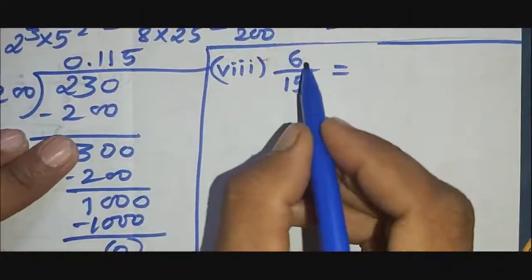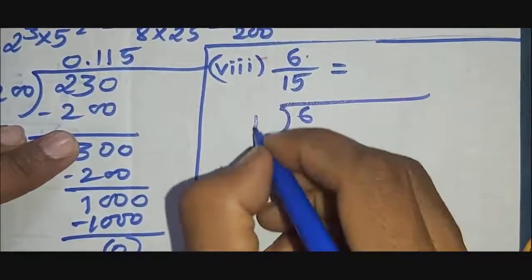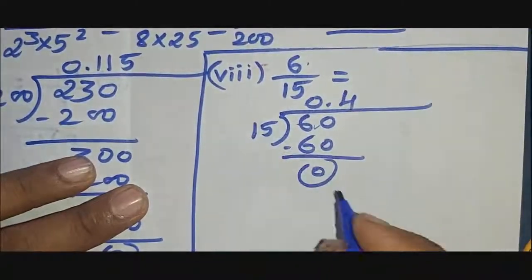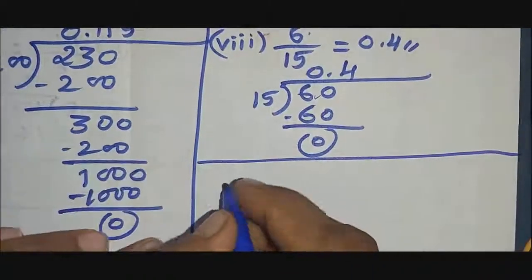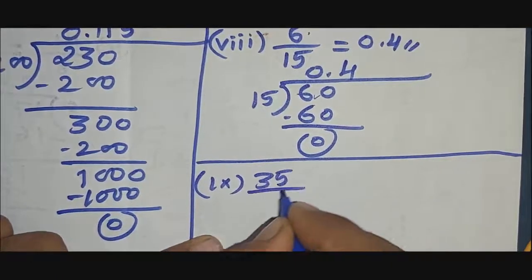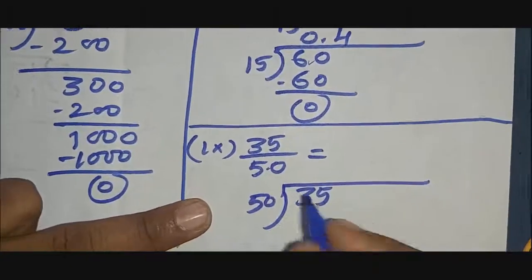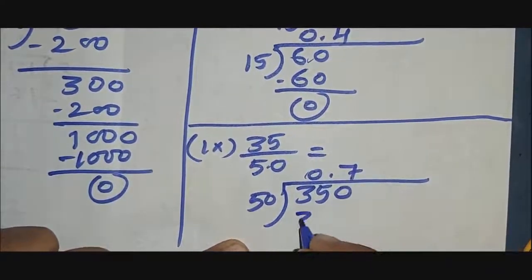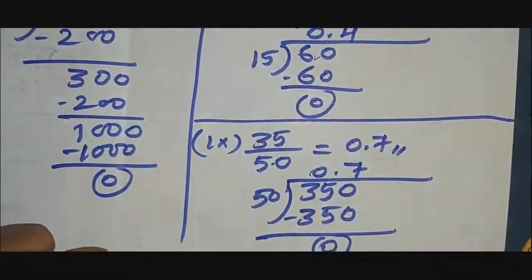Question 8: 6 divided by 15. After the decimal point, 15×4=60, remainder 0. So 6/15 = 0.4. Question 9: 35 divided by 50. 50×7=350, remainder 0. So 35/50 = 0.7.